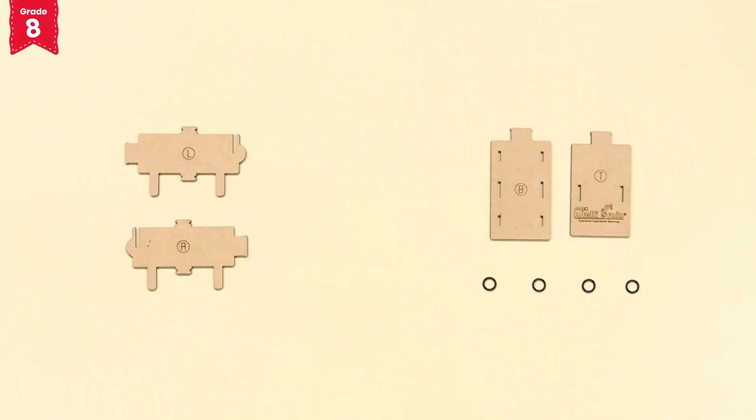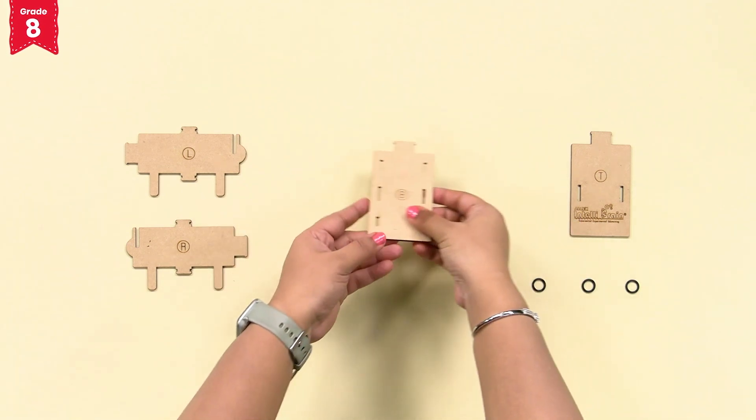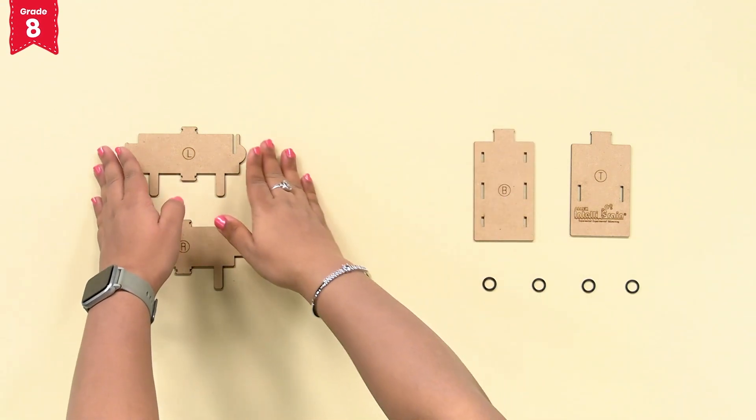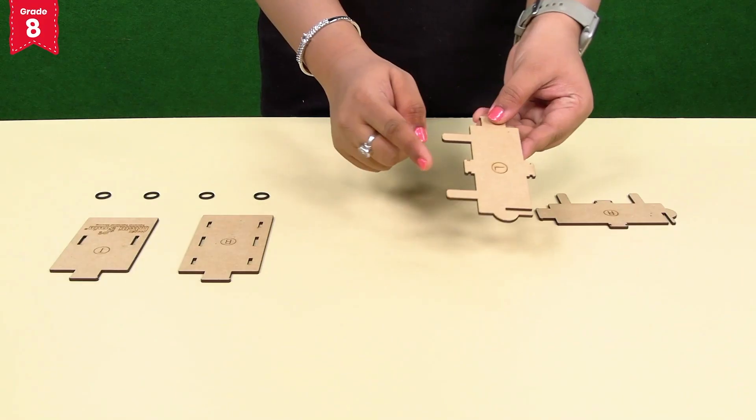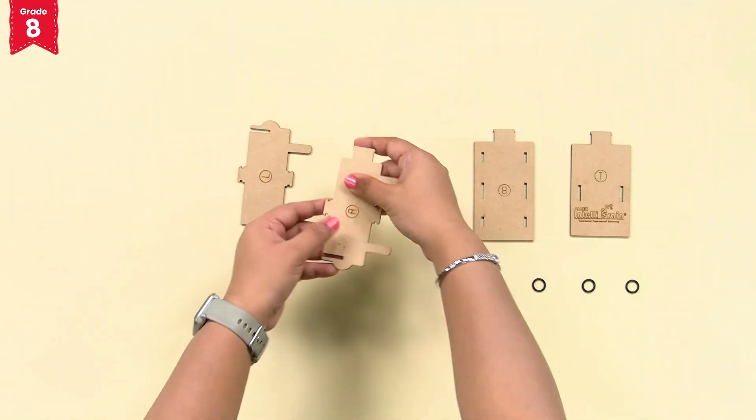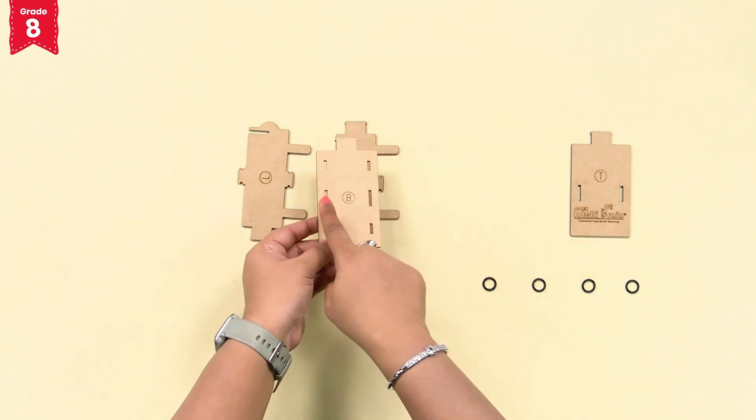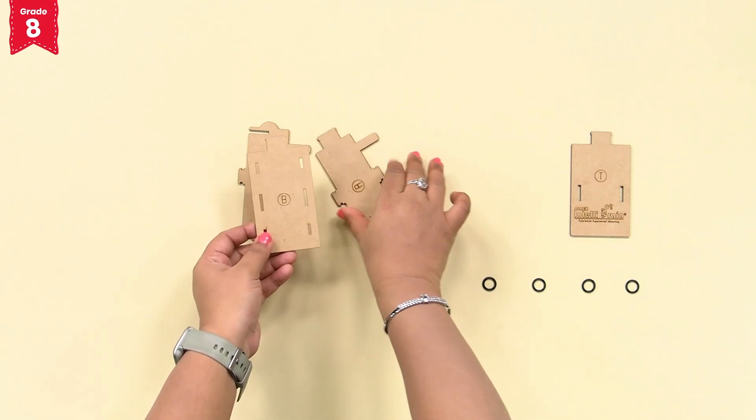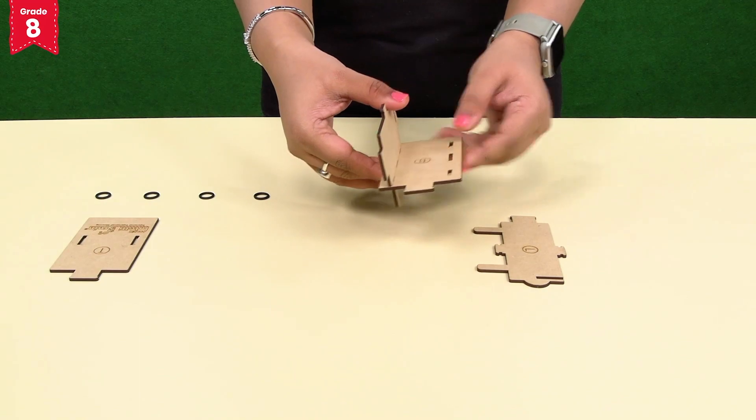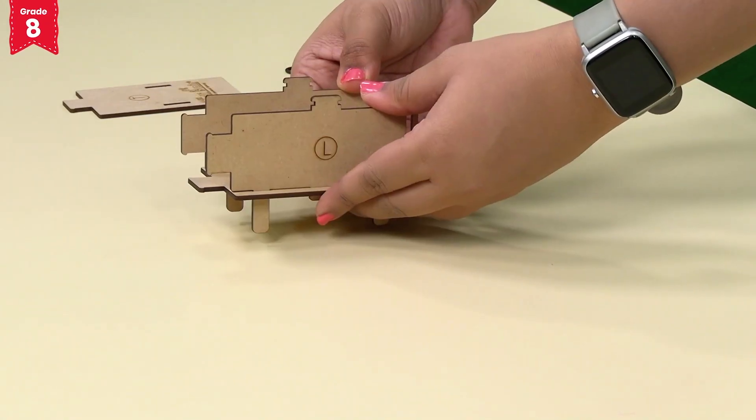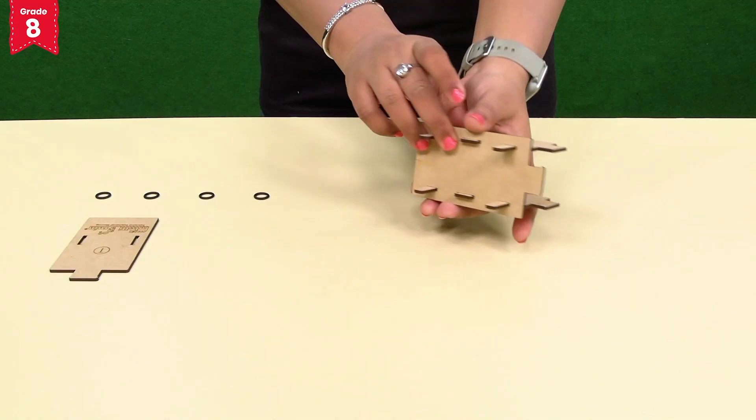Take the ray box parts L, R and B. Can you see these slits into plate B? Insert the extended parts at the middle of the plates L and R into these slits like this. Secure them with two O-rings on the other side.